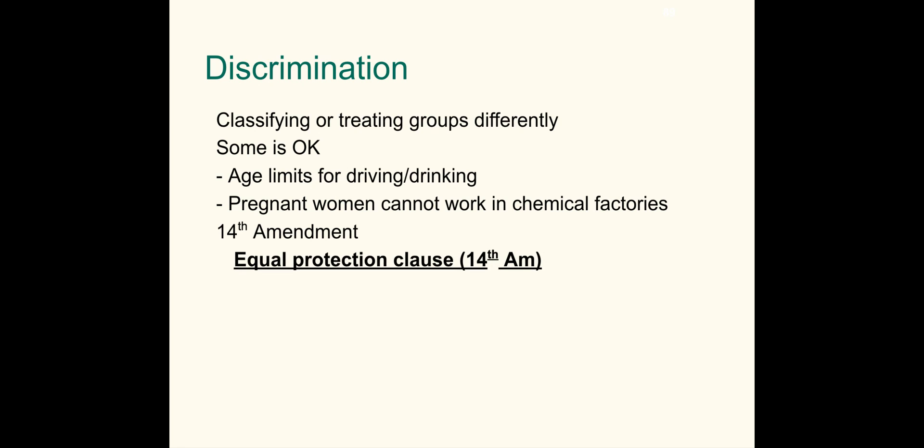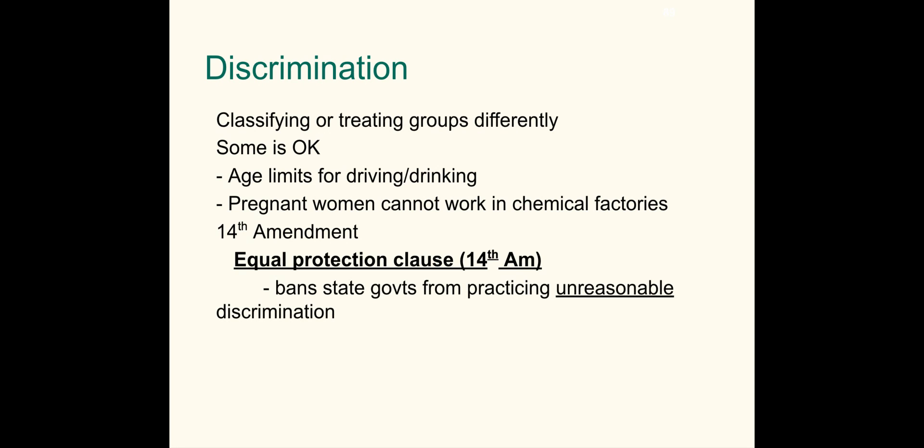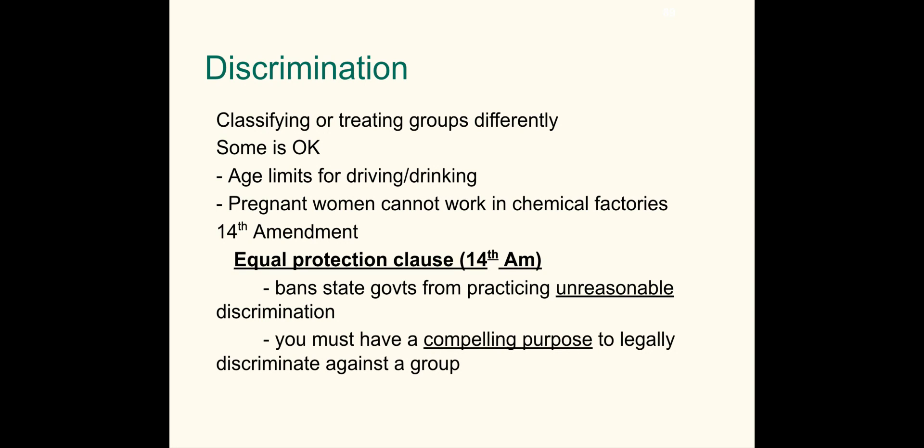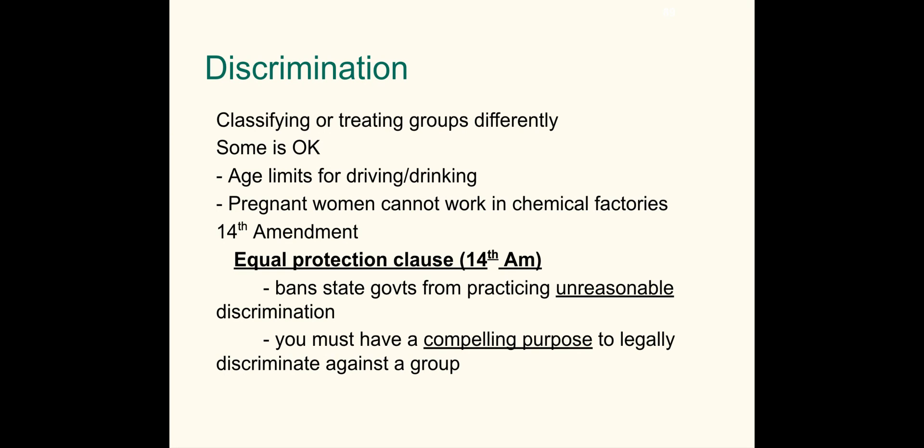The 14th Amendment has an Equal Protection Clause, which says that states have to protect all people equally. The Supreme Court interprets this to mean that state governments can't be unreasonable when they're discriminating. They have to have some compelling reason in order to treat one group of people differently than another, or to allow some type of legal discrimination against a certain group — only if they have a serious, compelling purpose proved through the courts or legislative branch.